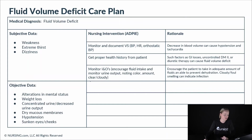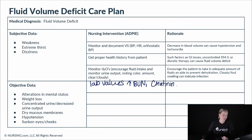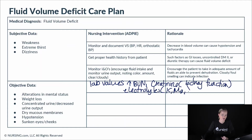We want to make sure we're monitoring lab values. We want to look for elevated BUN and creatinine, which reflect kidney function. We'll also look at electrolytes such as potassium and magnesium. We're also going to be looking at hematocrit — if there is no change in the hemoglobin, an elevated hematocrit can also reflect fluid volume deficit.